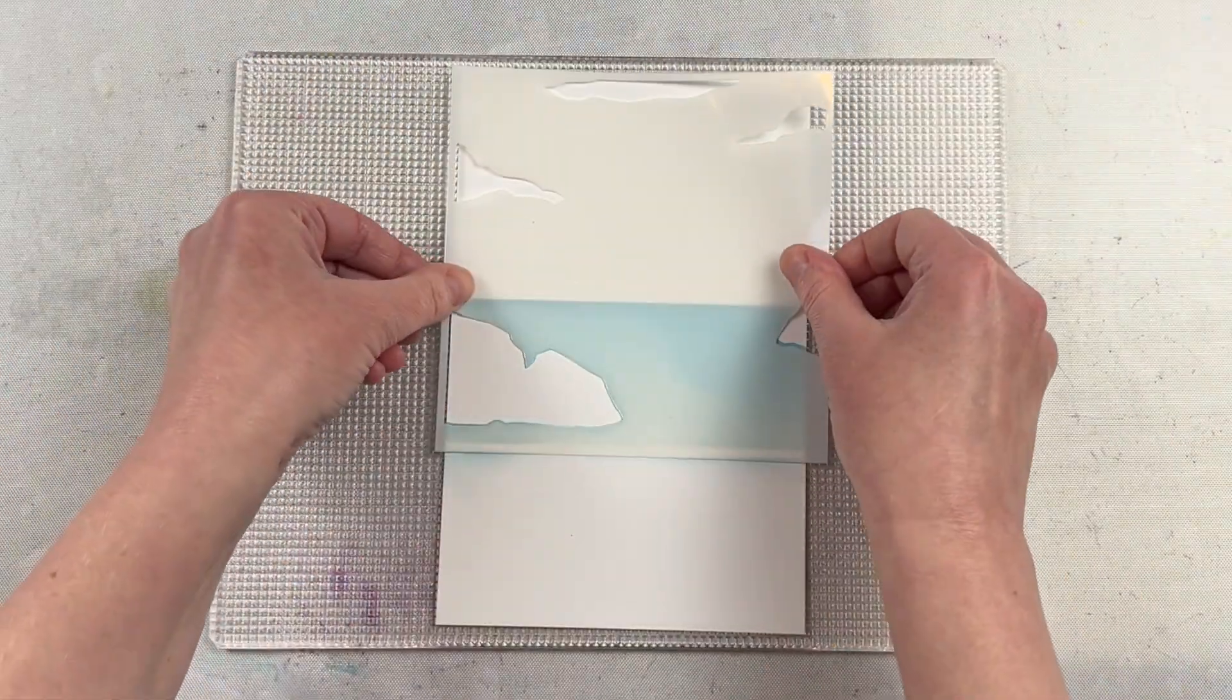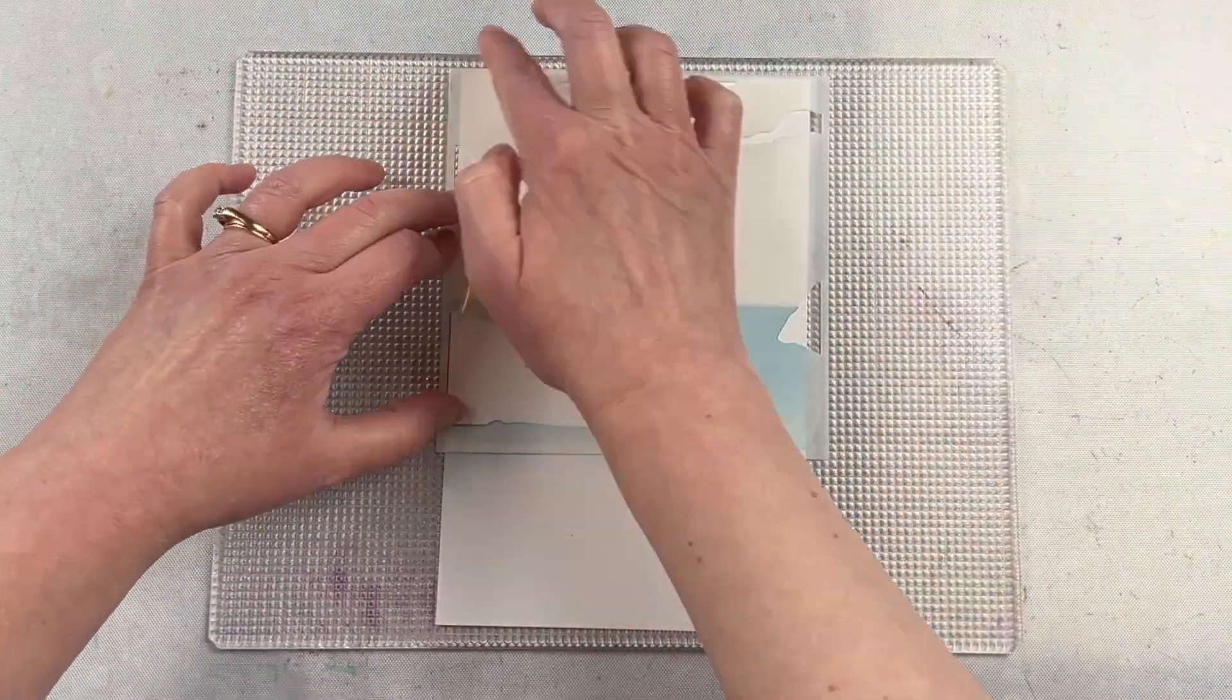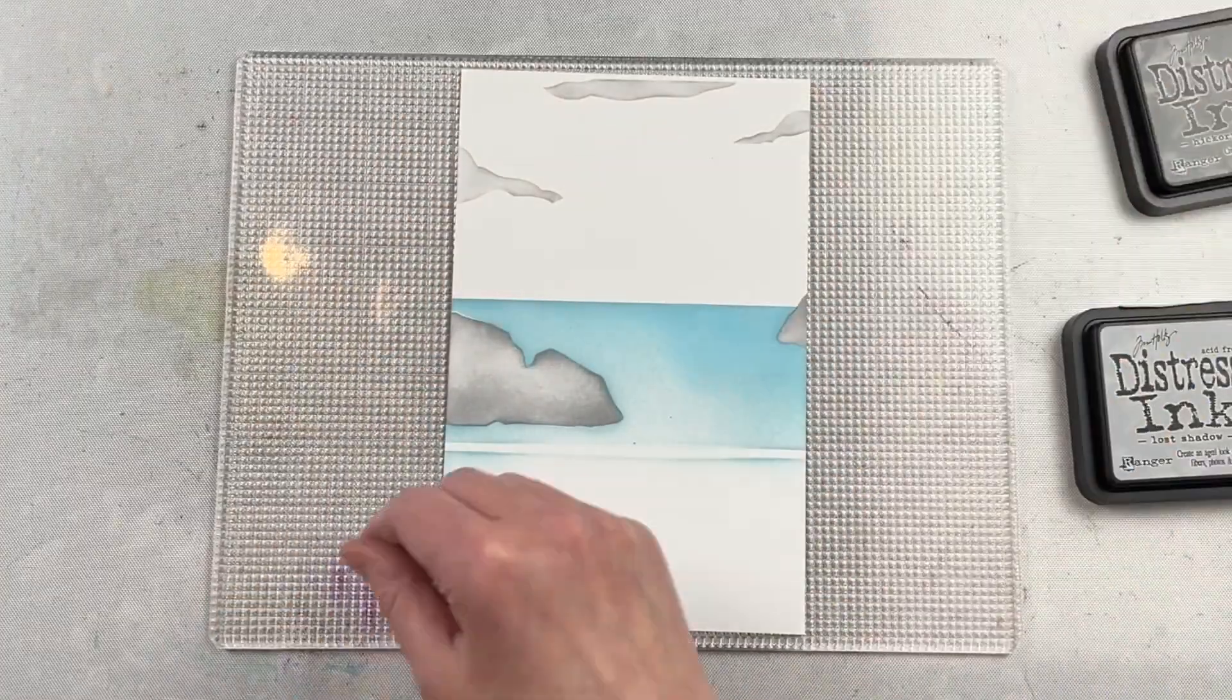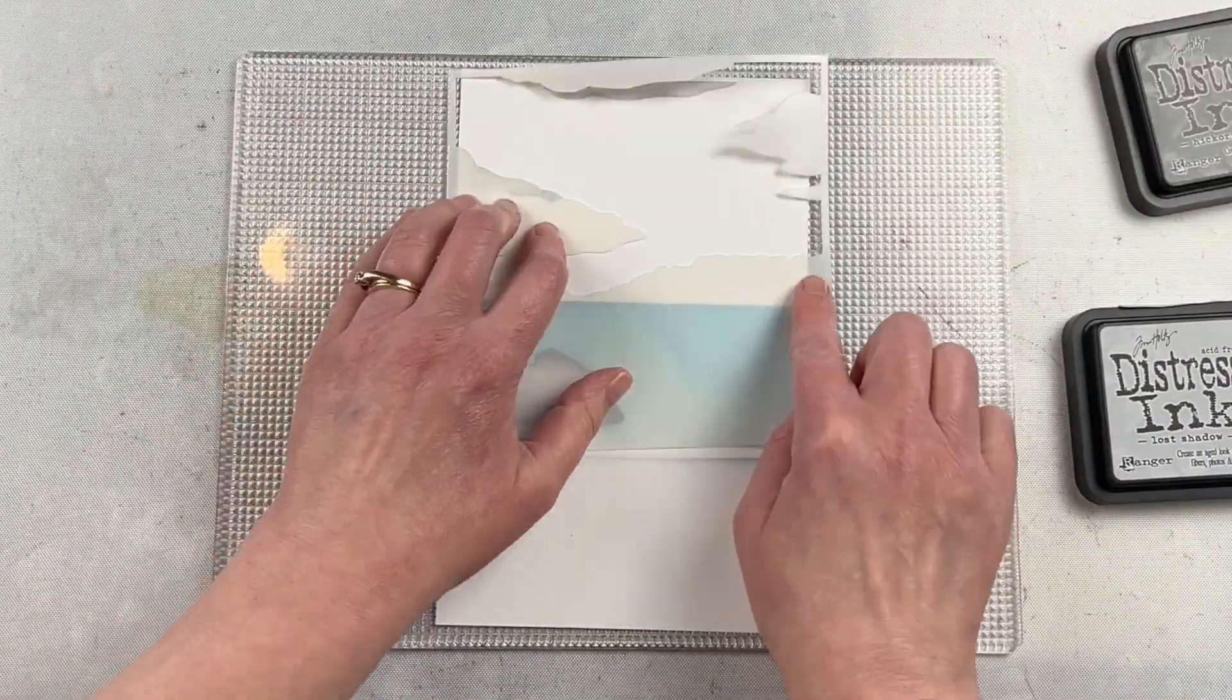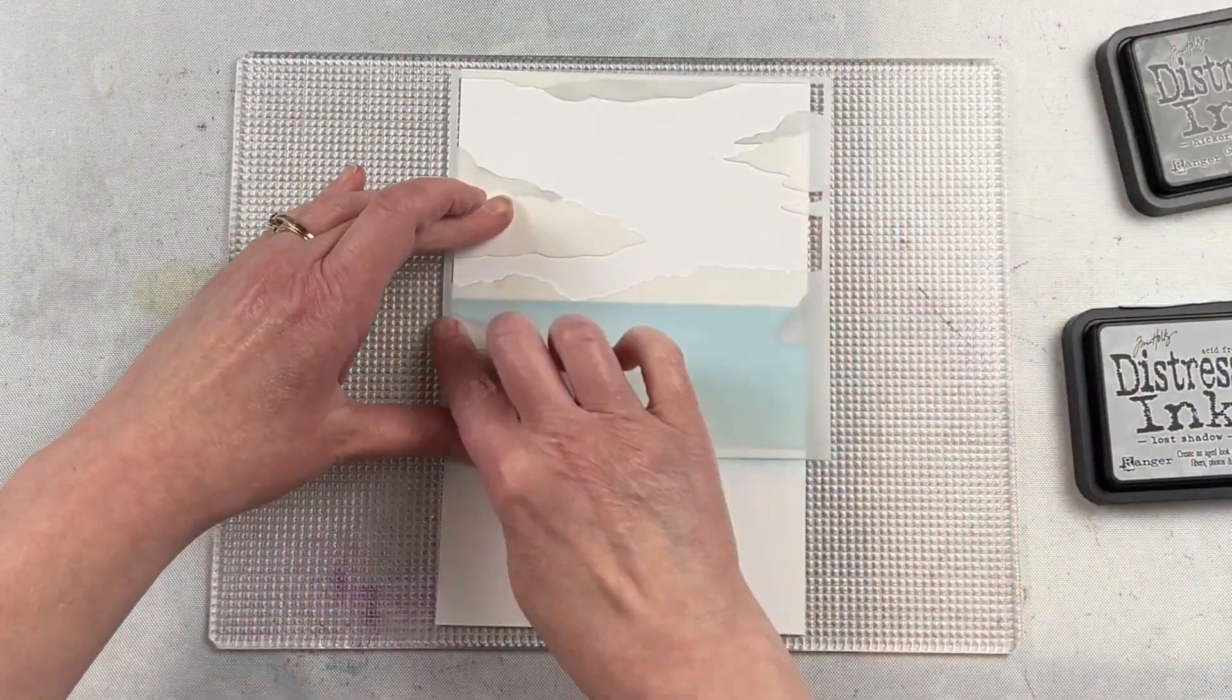Press it down to your paper to make sure that it doesn't move. I'm using a large piece of cardstock here because I want to have a full background in order to cut it down and trim it for the cards that I'm creating.